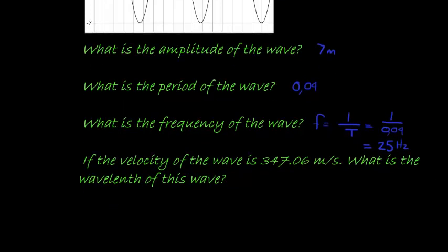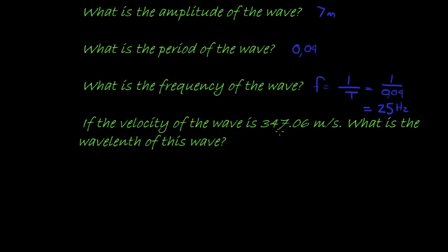If the velocity of the wave is 347.06 meters per second, what is the wavelength of this wave? In order to calculate wavelength, we do need velocity, because velocity is equal to wavelength times frequency, or we could go wavelength divided by period.